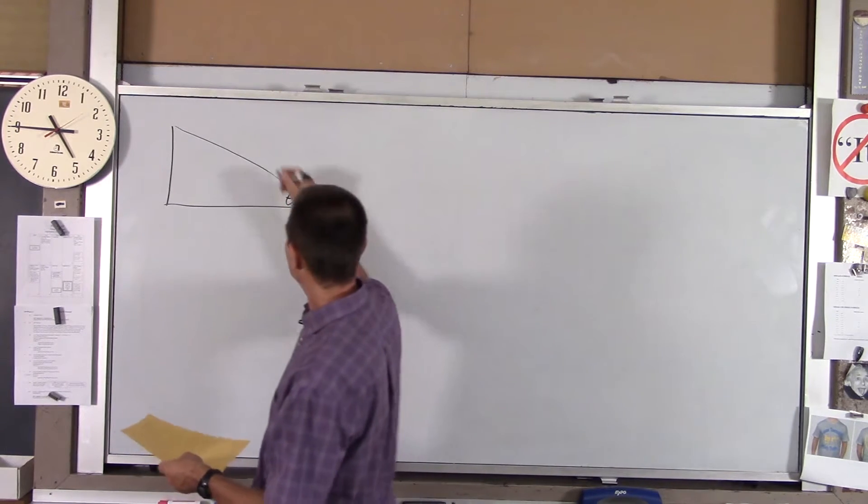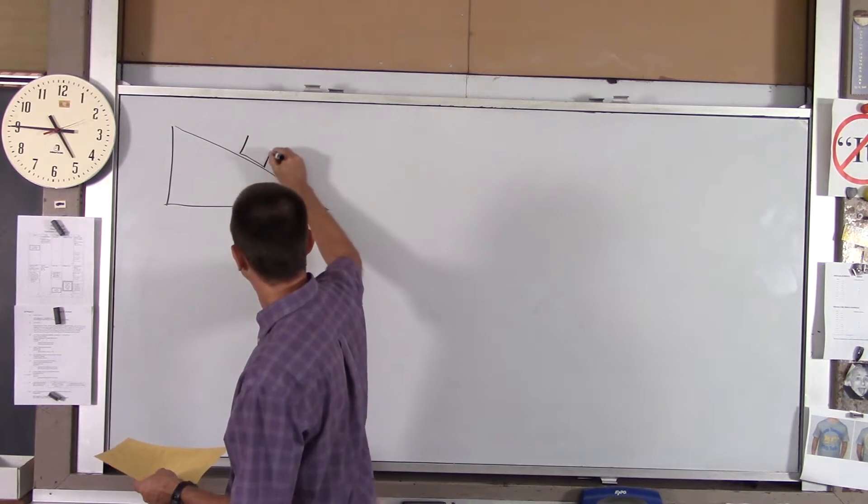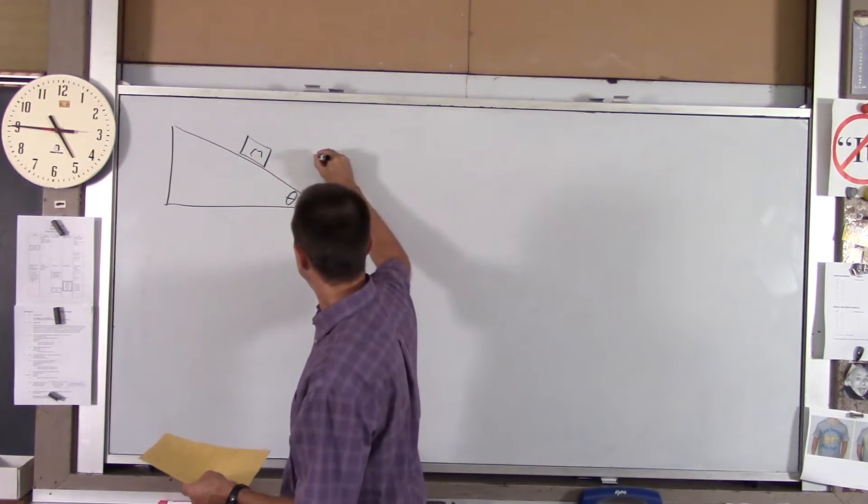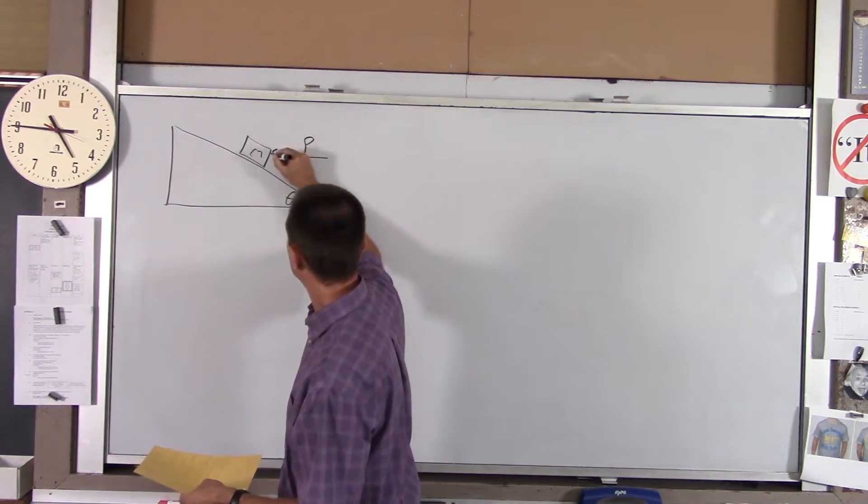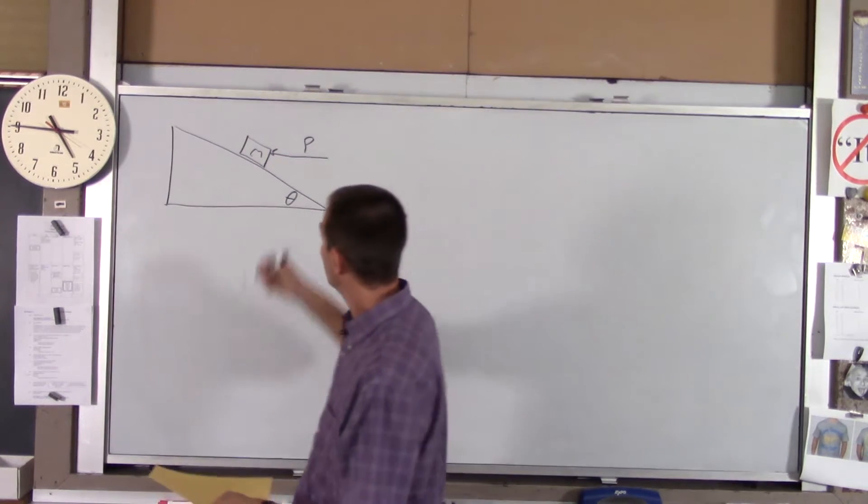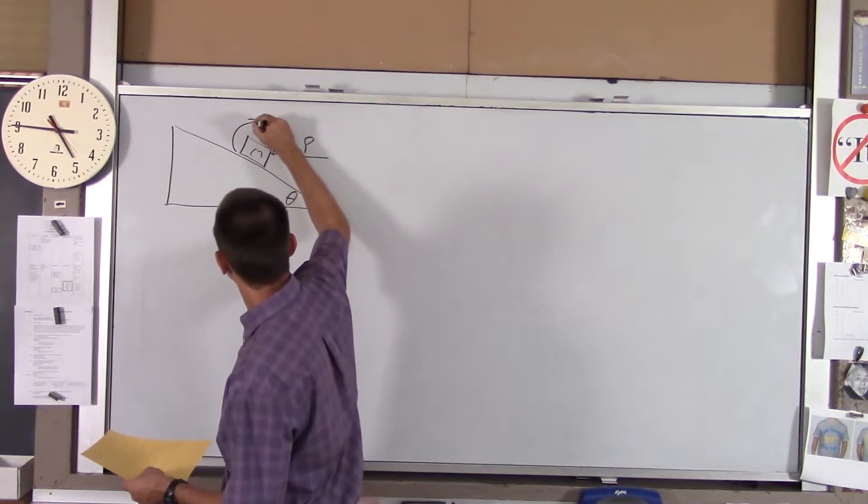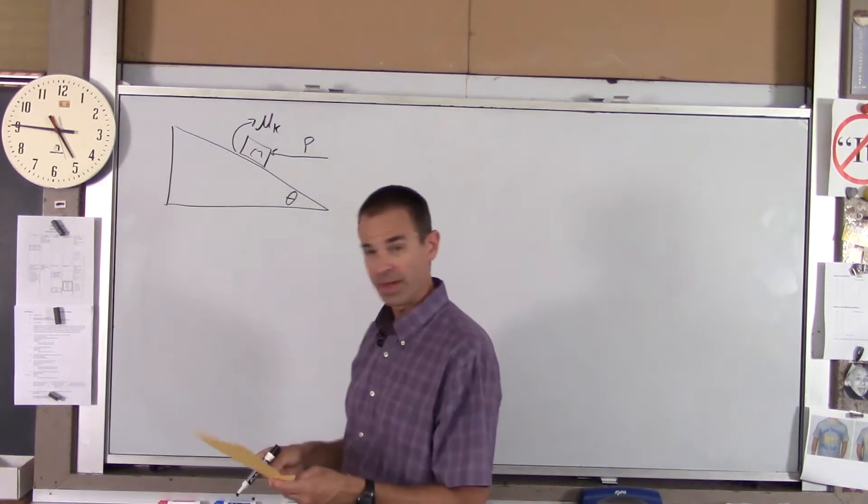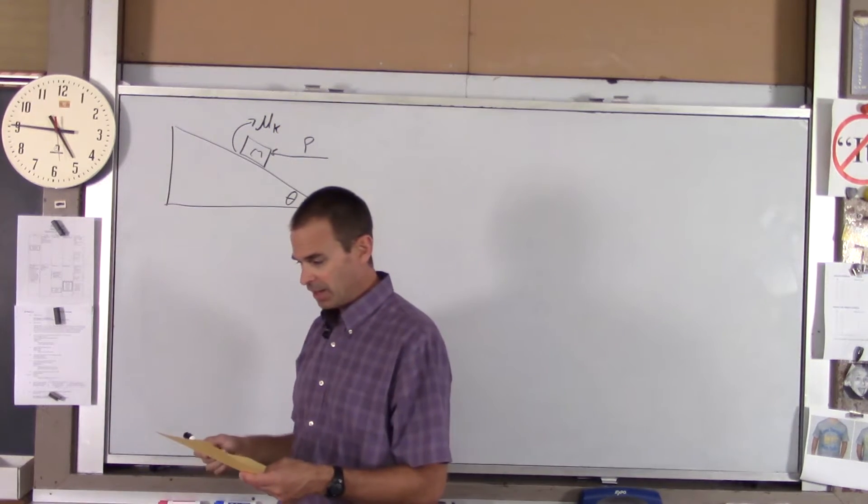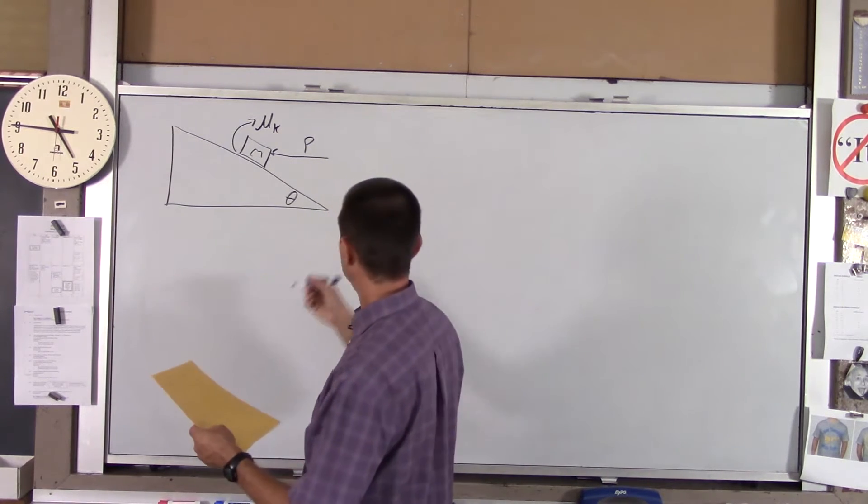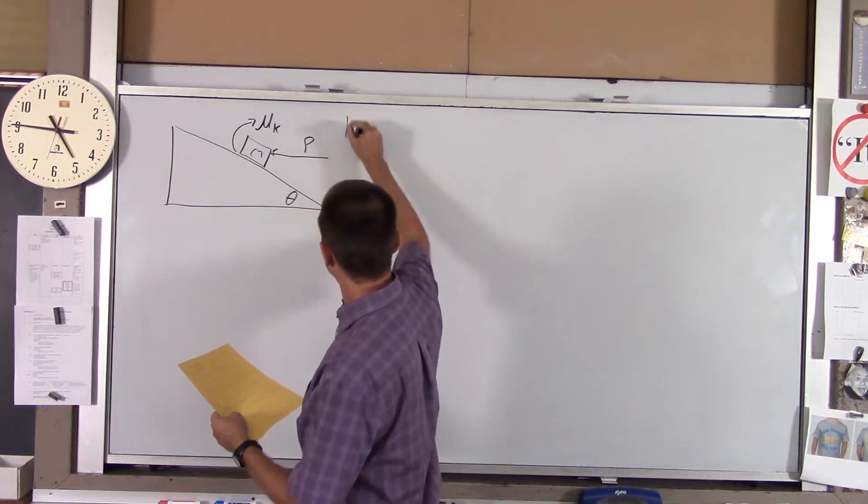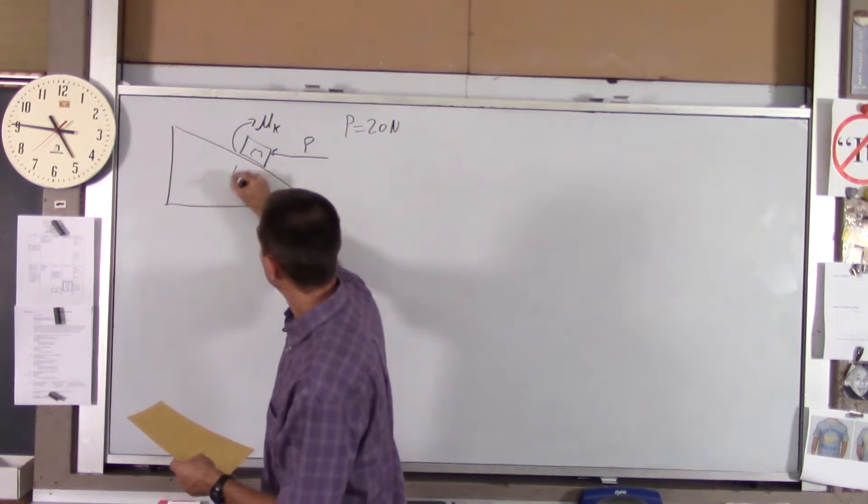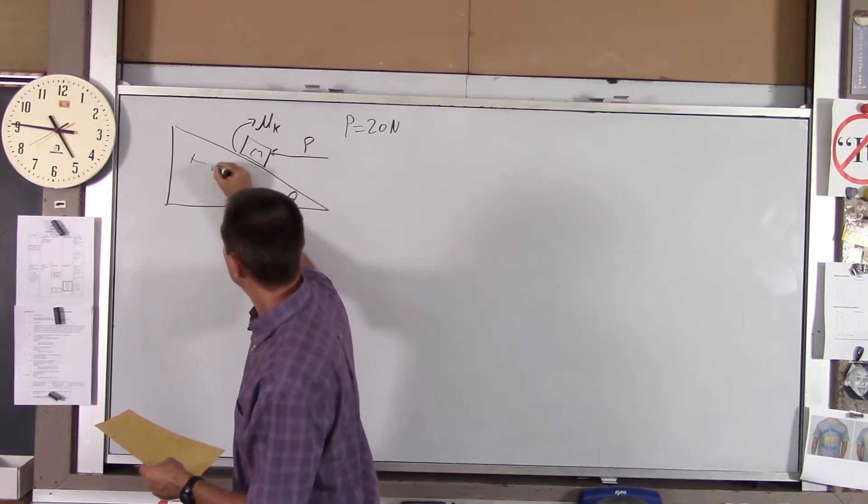We got a block with mass M being pushed this way with a force we'll call the force P (push), and there's a coefficient of kinetic friction - it is sliding, we'll call that mu sub k. Here are the numbers: the push is 20 newtons, the distance we're going to go along the incline is five meters.